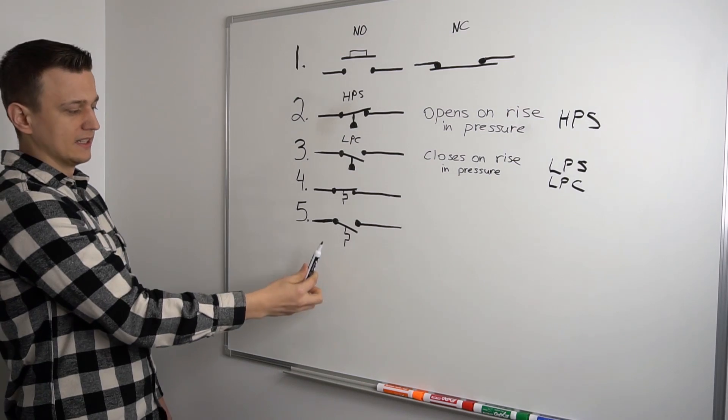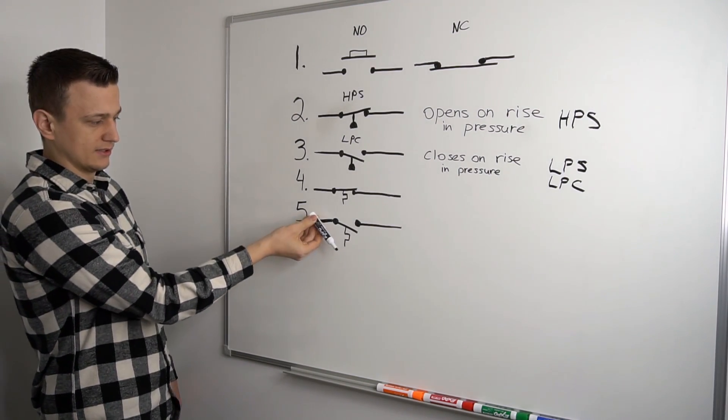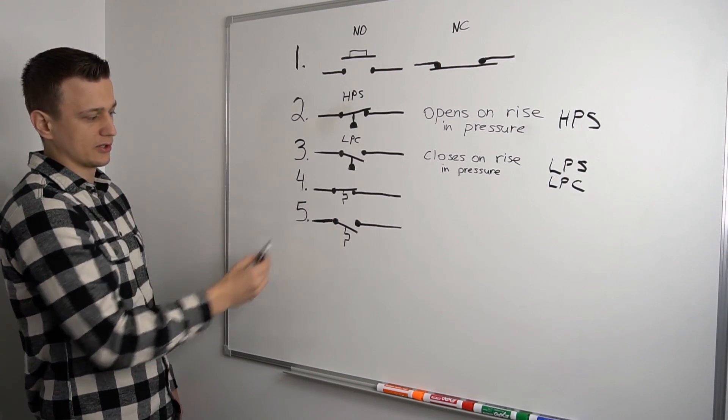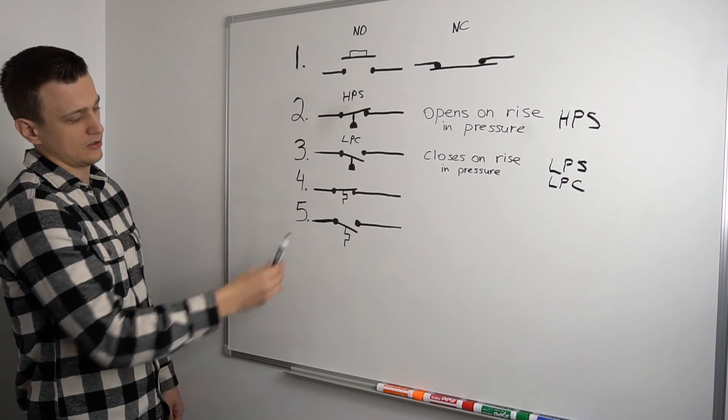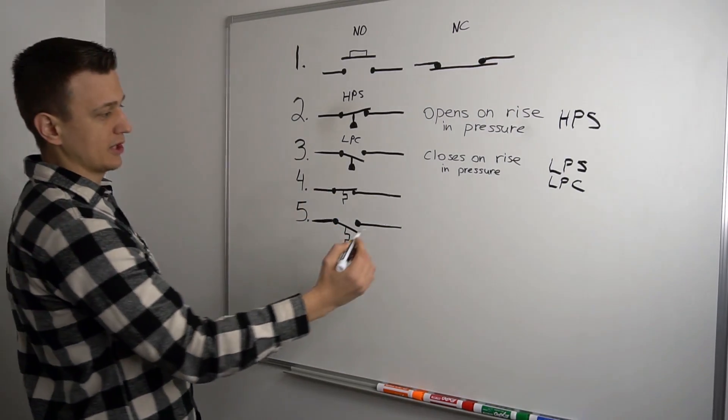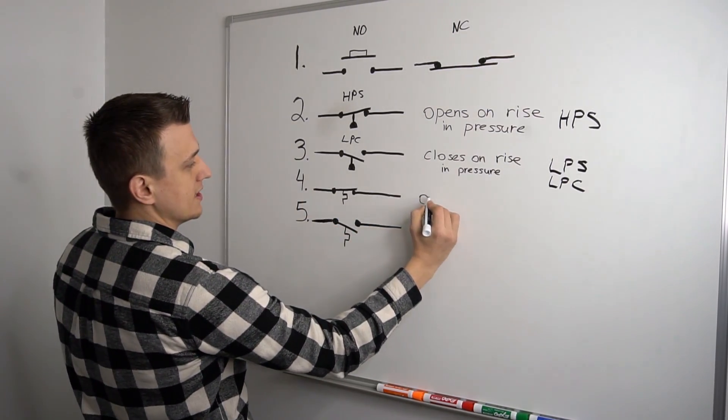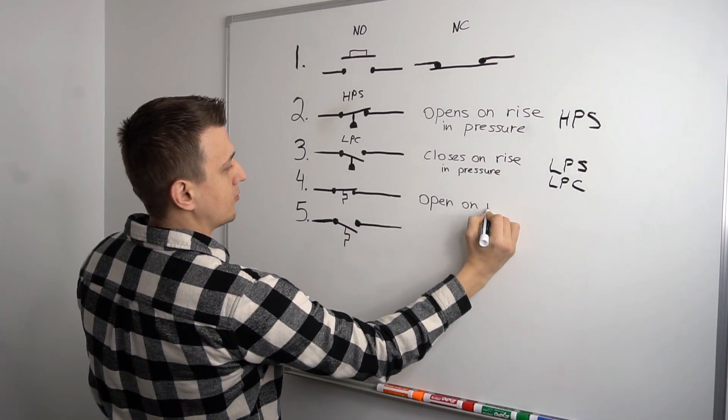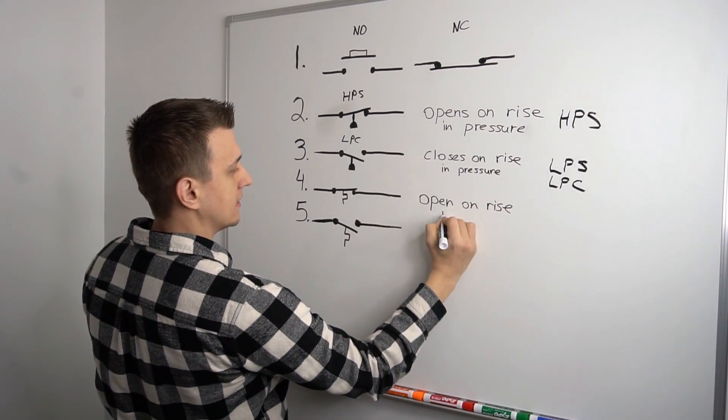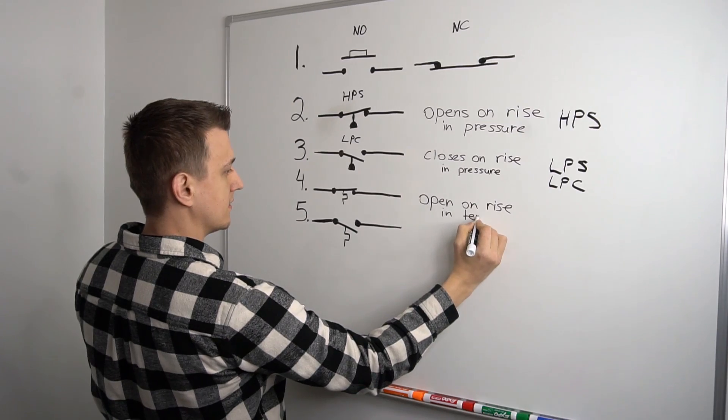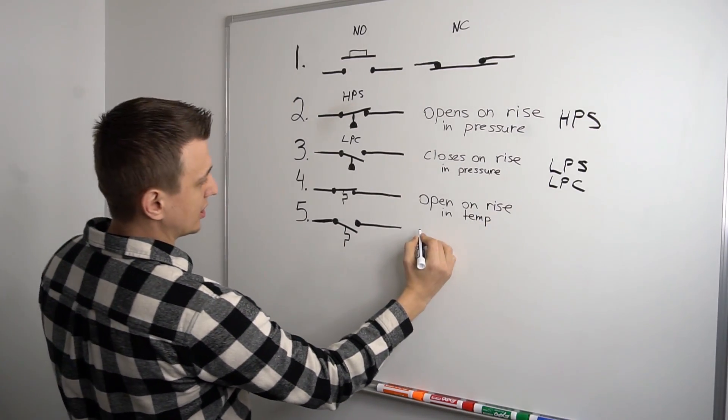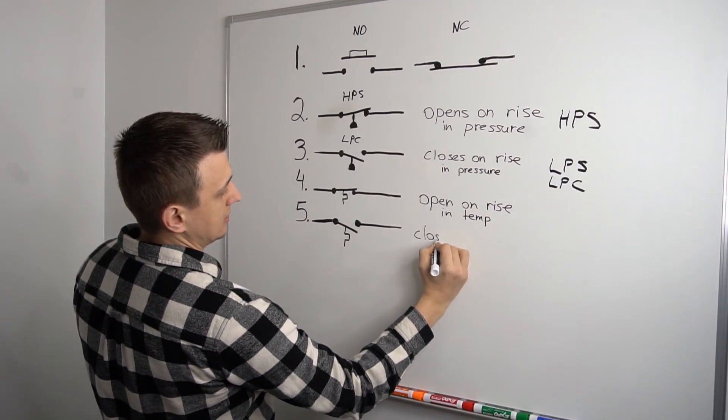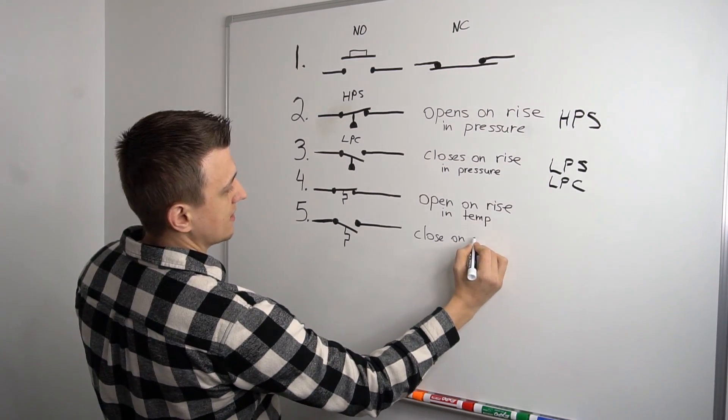So this switch right here is normally closed, but if it gets hotter than it's supposed to, this switch will open up and interrupt power. Whereas this one right here, if the temperatures go up, the switch closes and allows power to go through. So normally closed, normally open. And just like the pressure switches, this one would open on rise in temp. Whereas this one would close on rise in temp.